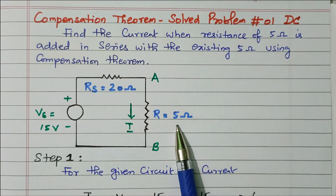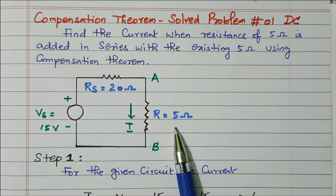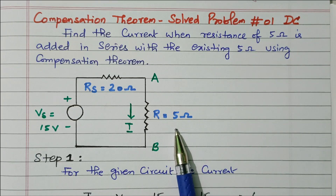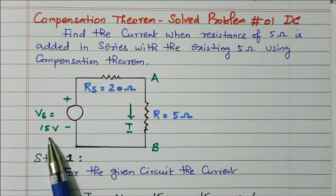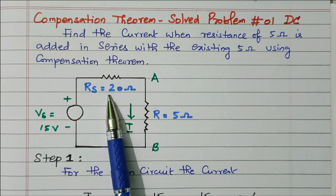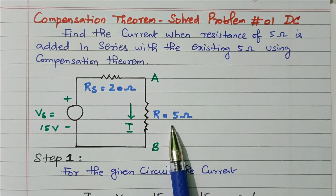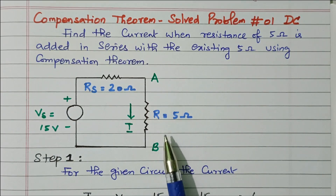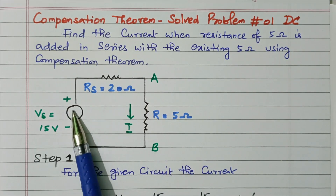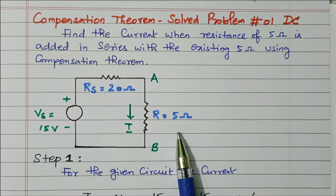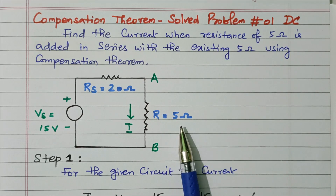While increasing this 5 ohm with another 5 ohm — making 10 ohm total — there will be an opposing voltage called the compensation voltage. In this network, there is a 15V voltage source with a series resistor of 20 ohm, and another resistor of 5 ohm marked at terminal AB. At terminal AB we are going to increase the resistor from 5 to another 5 ohm (5 + 5 = 10 ohm). First we need to identify the current flowing through the original circuit.